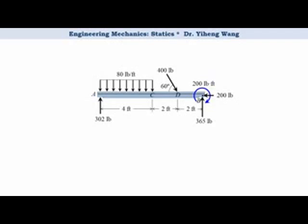Then, we want to set up an x-axis to represent the different locations along this member. You can set it up whichever way you want — from left to right, right to left, from the center, or even setting up multiple x-axes — but I always set it up from left to right, and for one particular problem I always only use one x-axis. On this axis, point A is the origin where x equals 0, and point B is at x equals 8. Any point between A and B can be represented by various x values on this axis.